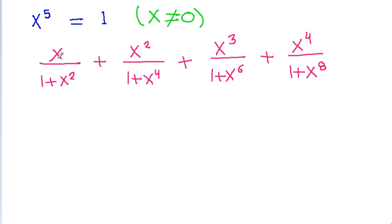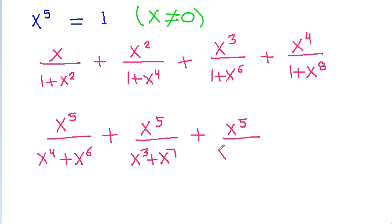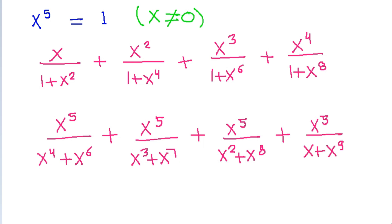If we multiply x by 1 plus x square with x power 4 by x power 4, then we get x power 5 by x power 4 plus x power 6. If we multiply with x cube by x cube, we get x power 5 by x cube plus x power 7. If we multiply by x square by x square, we get x power 5 by x square plus x power 8. If we multiply by x by x, we get x power 5 by x plus x power 9. And we have x power 5 equal to 1.